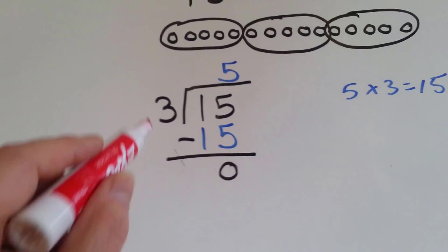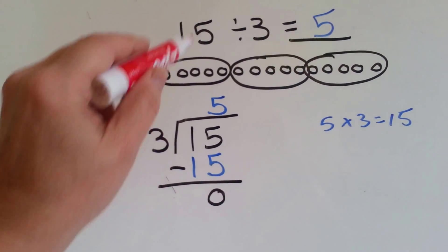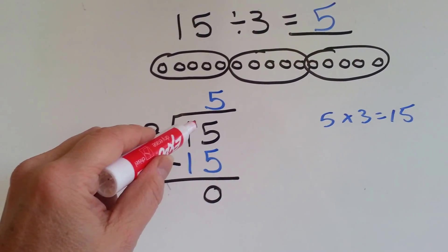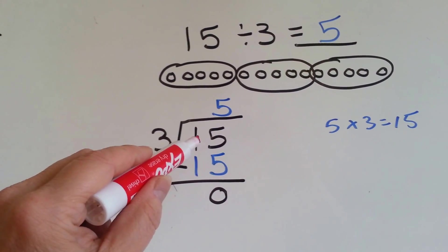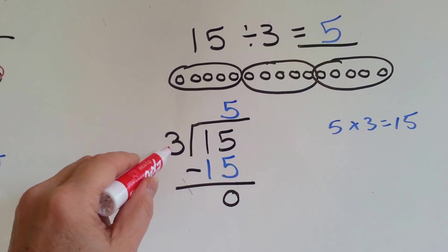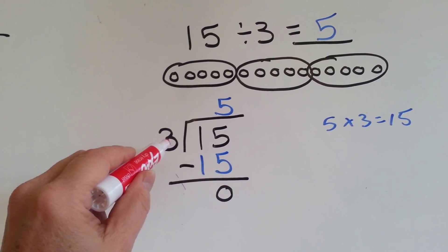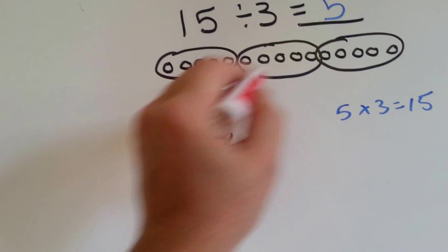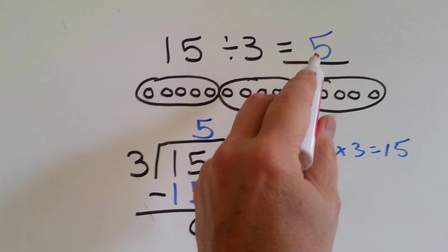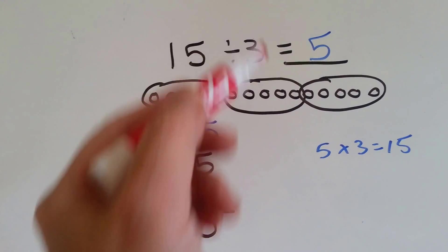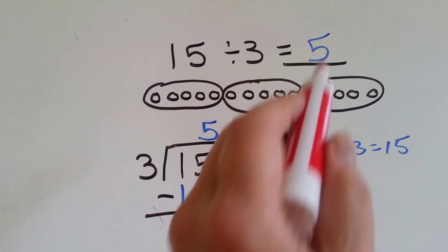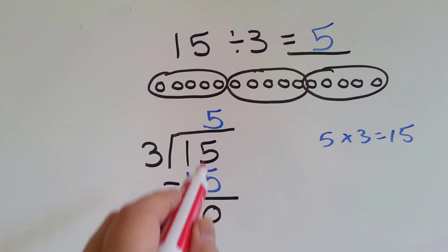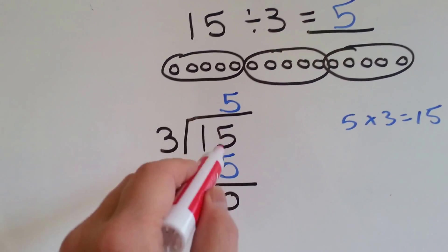This is how we would write it as long division. We put the big number, the 15, goes inside here. This number, the dividend, goes on the outside here, and the answer, the quotient, goes up on the top. Now because it's only a 5, it's in the 1's place. It's not a 35 or a 95, it's just a 5. That's in the 1's place. So that's going to go in the 1's place here.